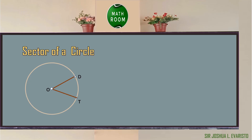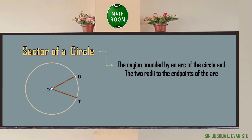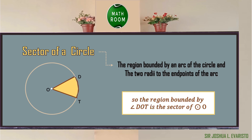Let us discover the sector of a circle. By definition, it is the region bounded by an arc of the circle and the two radii to the endpoints of the arc. In the given figure, the region bounded by angle DOT is the sector of circle O, and the yellow region is the sector of the circle.